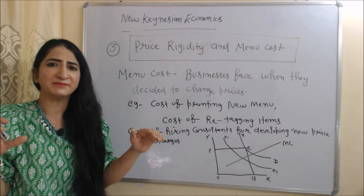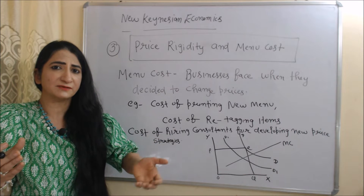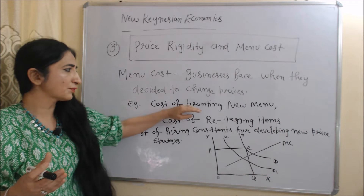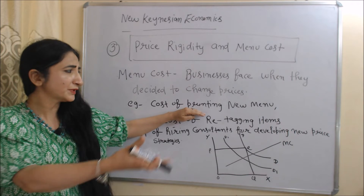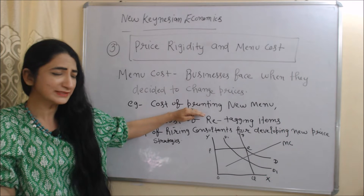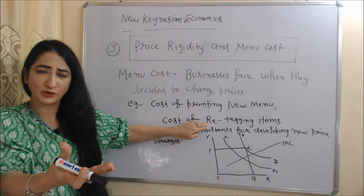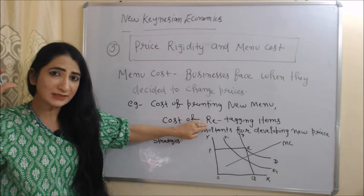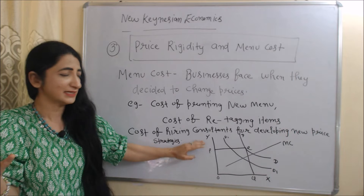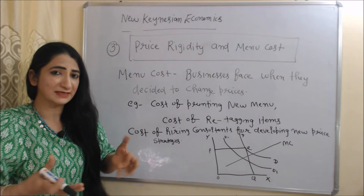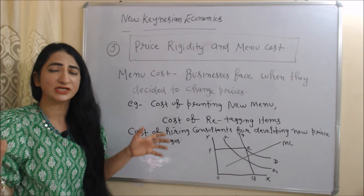Next is price rigidity and menu cost. According to new Keynesians, sometimes businesses are not able to change prices because of menu costs. Menu costs are costs businesses face when they decide to change prices. For example, the cost of printing a new menu when you change your prices, the cost of re-tagging items because old tags show old prices, and the cost of hiring a consultant to develop new pricing strategies. Because of these menu costs, sometimes businesses are not able to change prices.